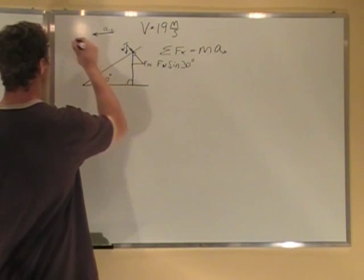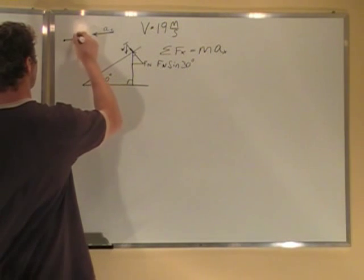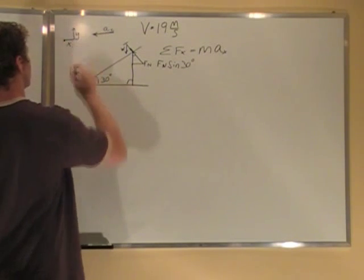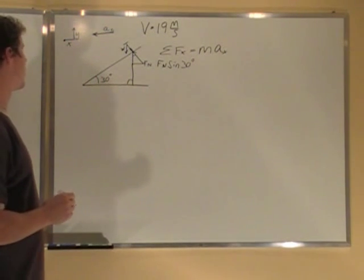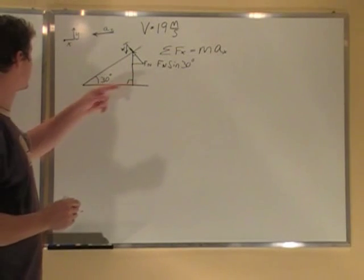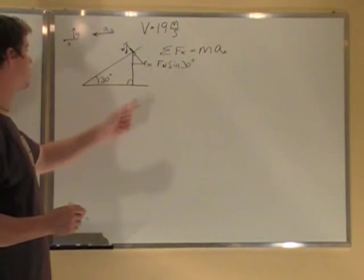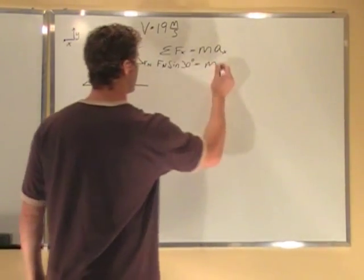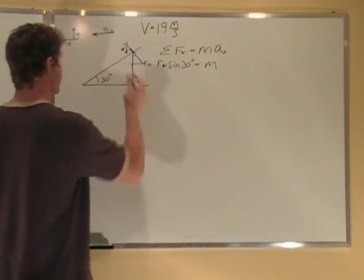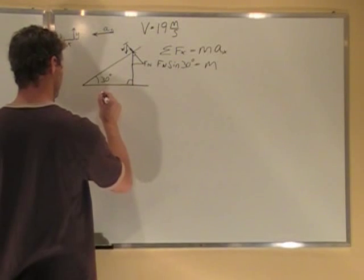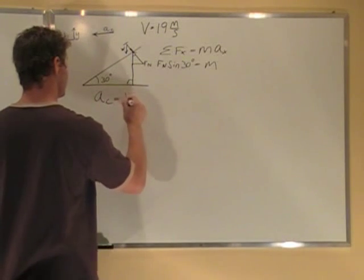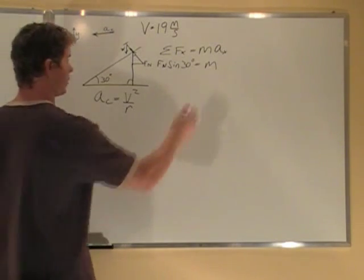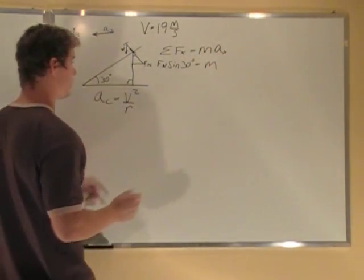I'm going to define that as positive, so it can just be positive. Our acceleration is acting this way, normal force acting this way. Fn sine 30 equals m times acceleration. Acceleration in the x is centripetal acceleration, which we know is v squared over r. So instead of ac here, I'm going to put in v squared over r.